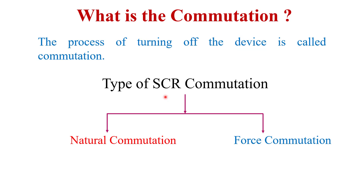There are basically two types of SCR commutation: first is natural commutation, and second is force commutation.